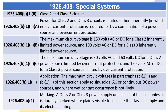1926.408(B)(1)(iii) — Application. The maximum circuit voltages in paragraphs B.1.i and B.1.2 of this section apply to sinusoidal AC or continuous DC power sources, and where wet contact occurrence is not likely. 1926.408(B)(2) — Marking. A Class II or Class III power supply unit shall not be used unless it is durably marked or plainly visible to indicate the class of supply and its electrical rating.